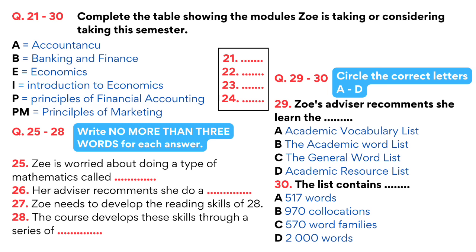So, in your first semester, you've got Principles of Marketing, Introduction to Economics, Banking and Finance, and Principles of Financial Accounting. How do you feel about that as a package? It's OK, I think, but I'm a bit worried about the maths. There'll be some statistics to do, won't there? Basic statistics, yes, but nothing more difficult than your last year of school maths. I know, but our maths syllabus was a bit old-fashioned. Mostly algebra, geometry, trigonometry and stuff. Hardly any stats.